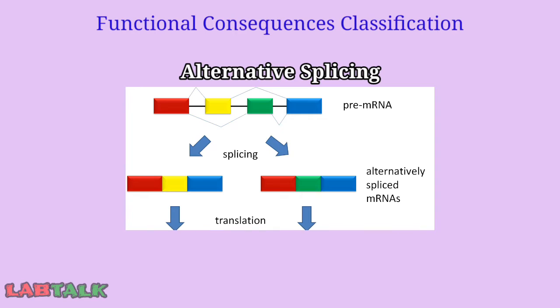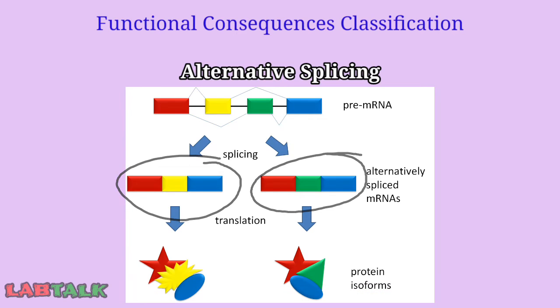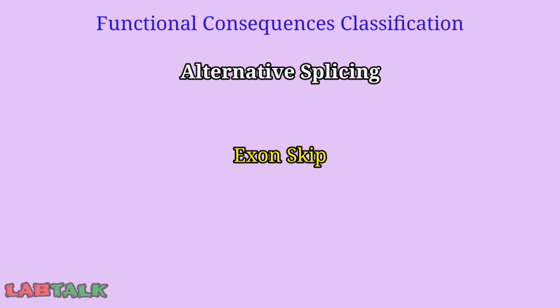In alternative splicing, exons are joined in different combinations, leading to different mRNA sequences. Consequently, the proteins translated from alternatively spliced mRNA will differ in their amino acid sequences. This allows the human genome to direct the synthesis of many more proteins than would be expected from its 20,000 protein-coding genes. The most common mode of alternative splicing is exon skipping, in which a particular exon is skipped during splicing, producing a different final mRNA product.